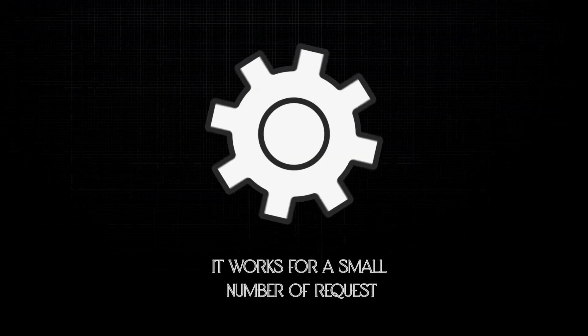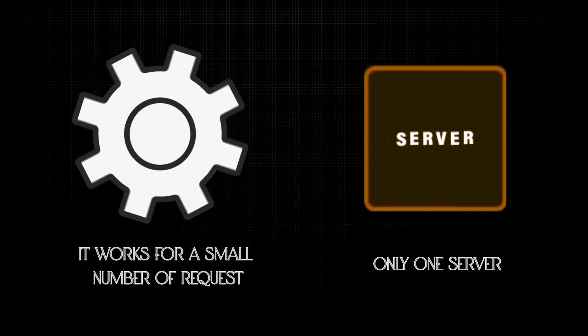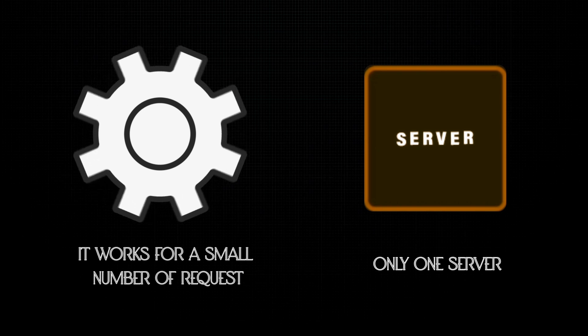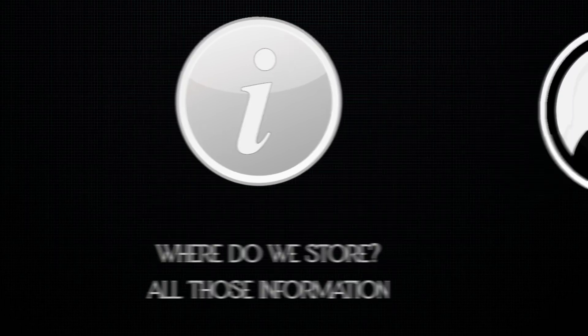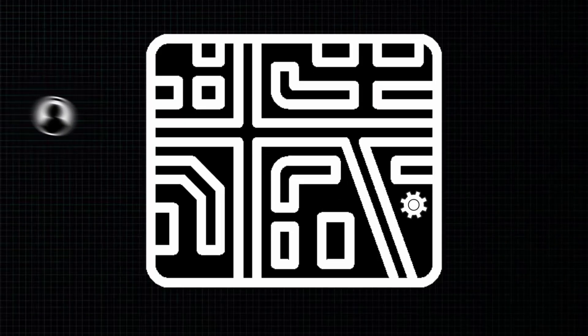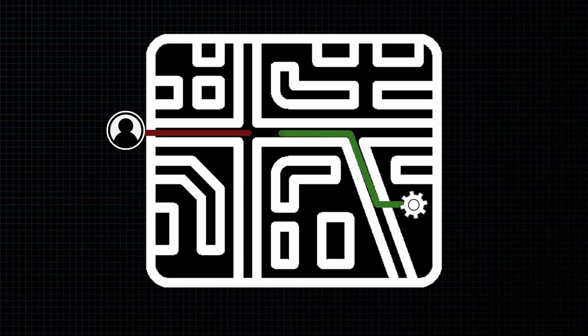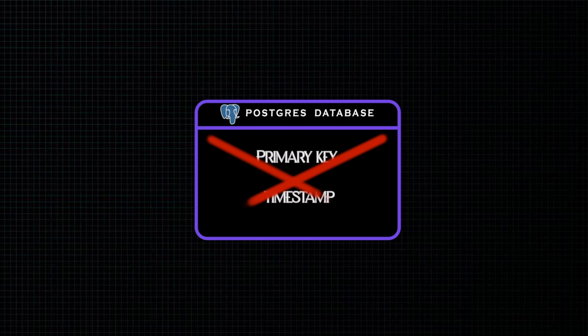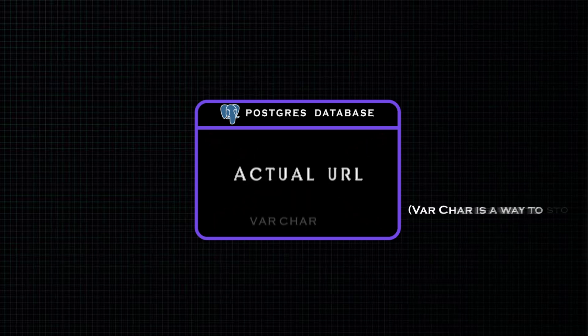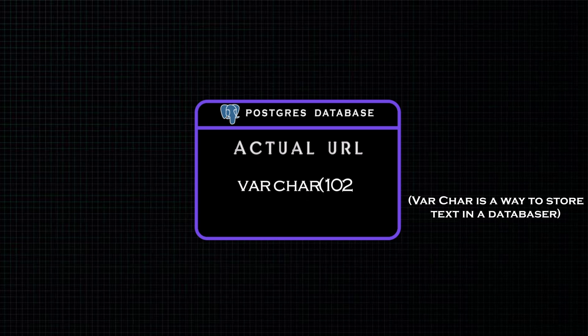The system works for a small number of requests since we have only one server. Scaling is important to discuss in an interview. But first, let's define a correct system. We need to store the mapping — when the user comes and shortens a URL, we save it so that future requests with the shortened form can return the original URL. We will use a database, like Postgres, which has a primary key, timestamps, and the actual URL as a varchar of maybe 1024 characters.